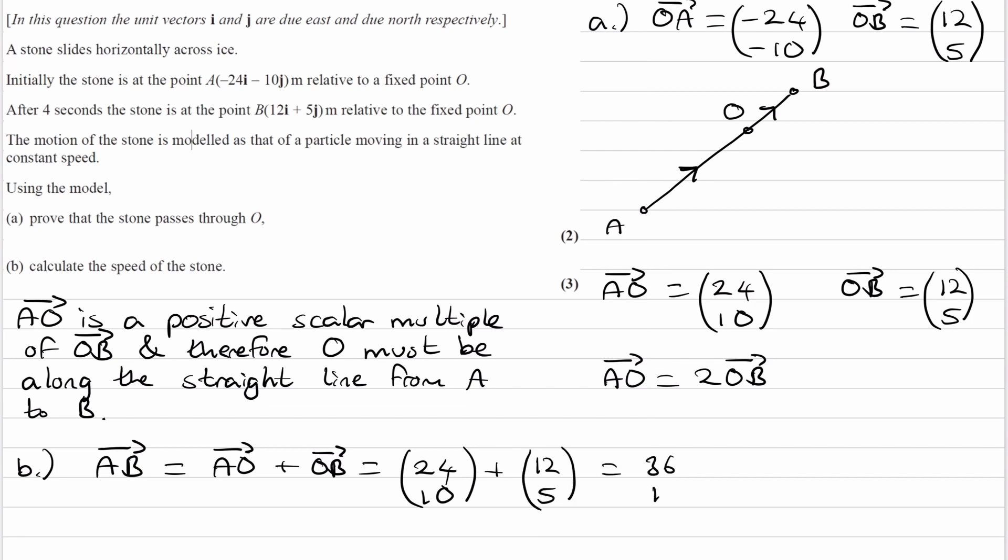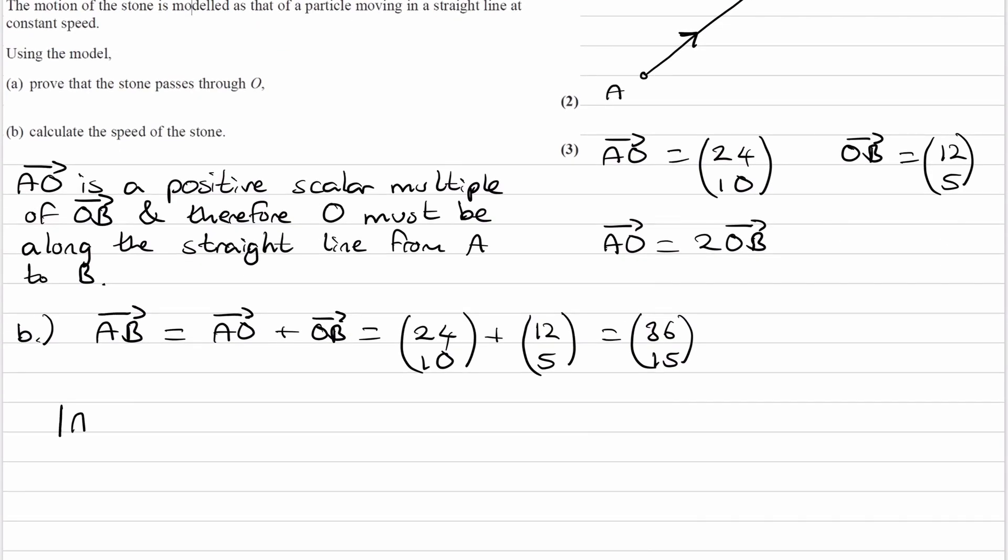which will be (36, 15). The magnitude of AB would be the square root of 36 squared plus 15 squared, which is 39.